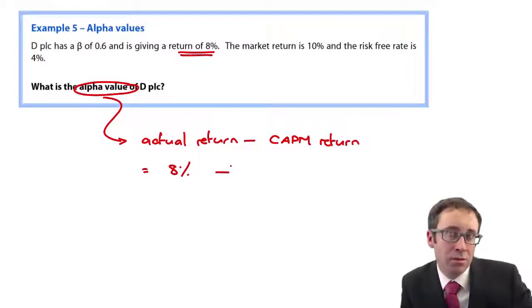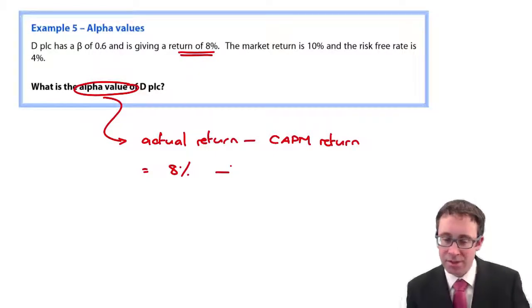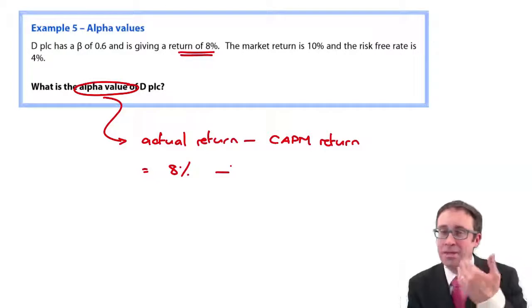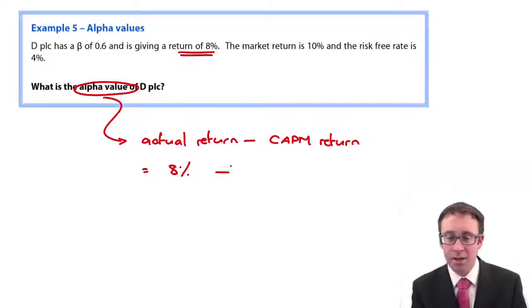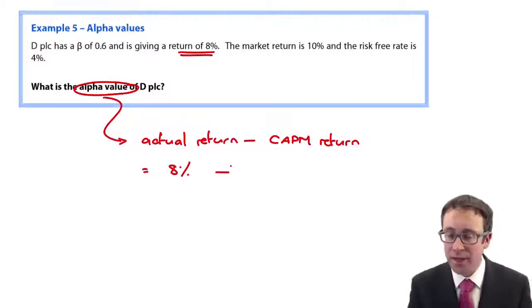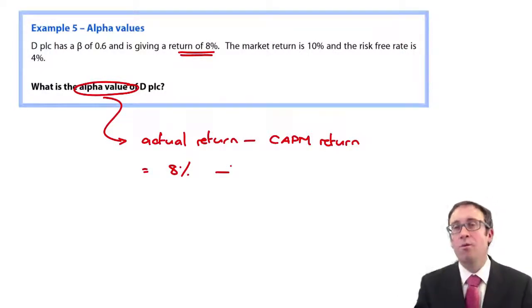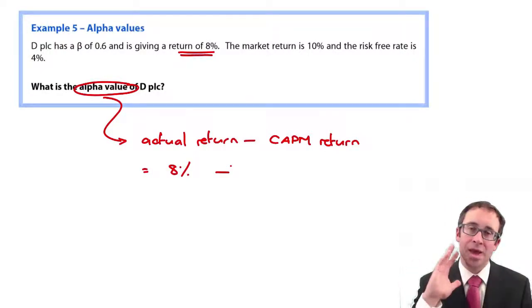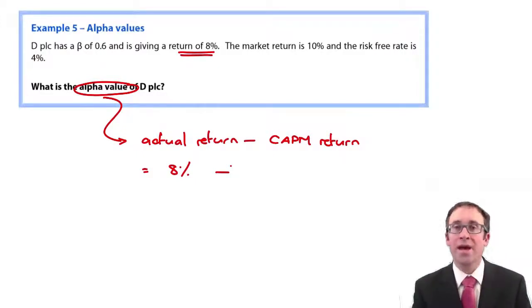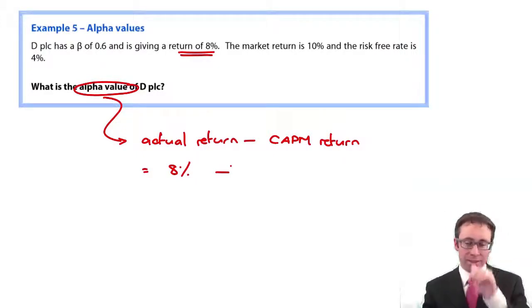With that beta of 0.6, is that beta right? Don't know. It's an estimate. The market return 10 percent. Again, that's based on history and the past. The risk free rate is possibly what we know with the most certainty, the easiest one to get. But what it means is that the estimate that we work out is different to ultimately that 8 percent that we are actually getting.